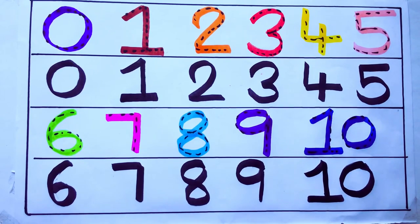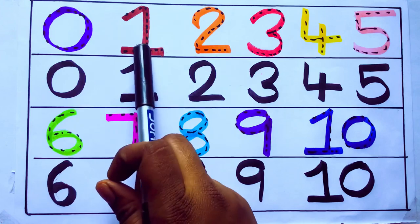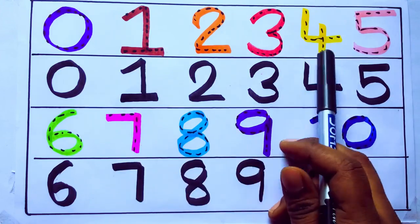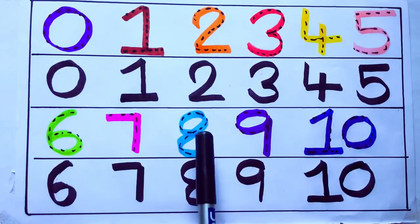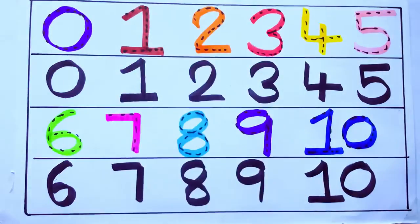Second learning numbers: 0, 1, 2, 3, 4, 5, 6, 7, 8, 9, 10. Okay. Bye kids.